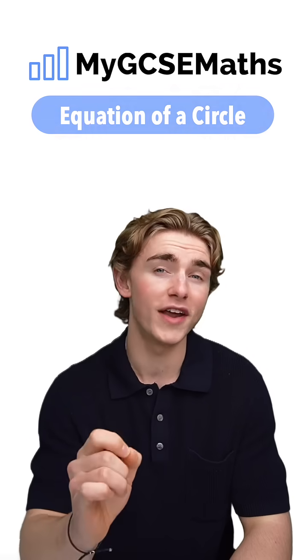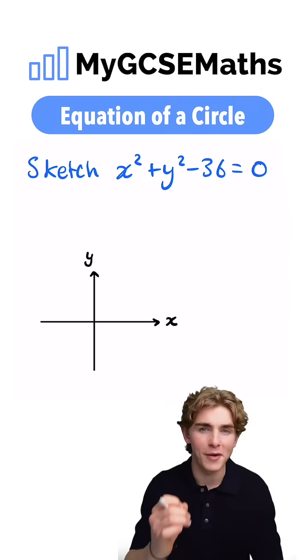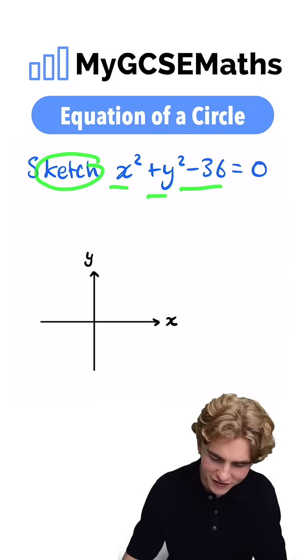GCSE Maths working with the equation of a circle in 81 seconds. Let's go. Let's say we're in our exam, we turn over the page and we see this question, sketch x squared plus y squared minus 36 equals zero.